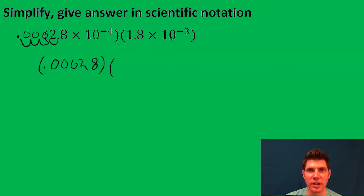And then 1.8 times 10 to the negative 3rd, same thing, we move it back 3 spaces. The decimal is now there, so it's 0.0018.